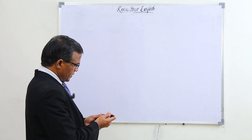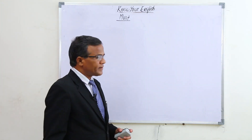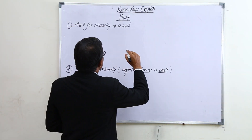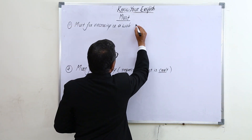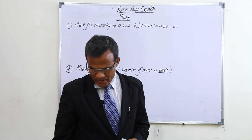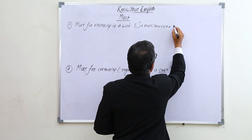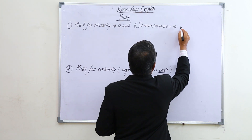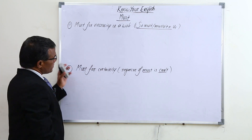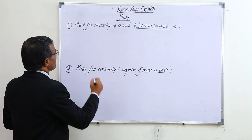Let's go over 'must' for necessity. The structure is: subject plus must plus V1. After giving all examples, I will explain these things to you.